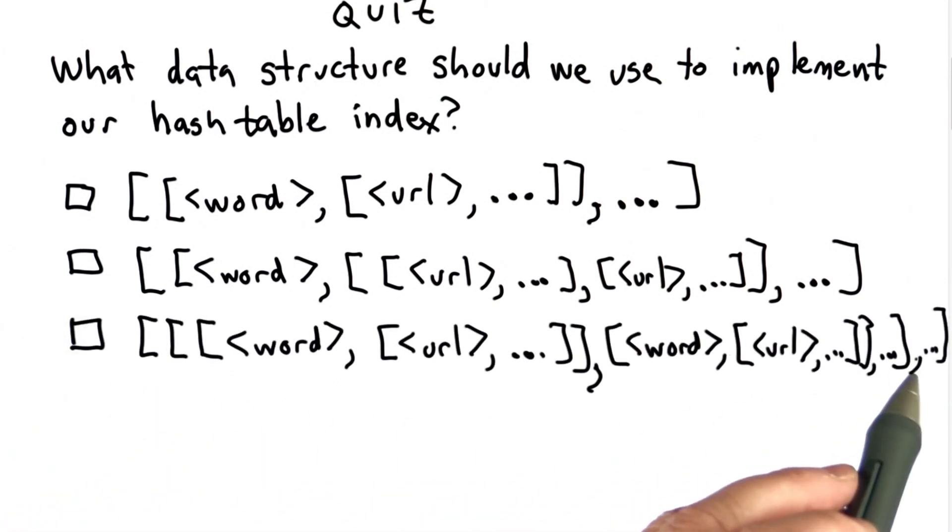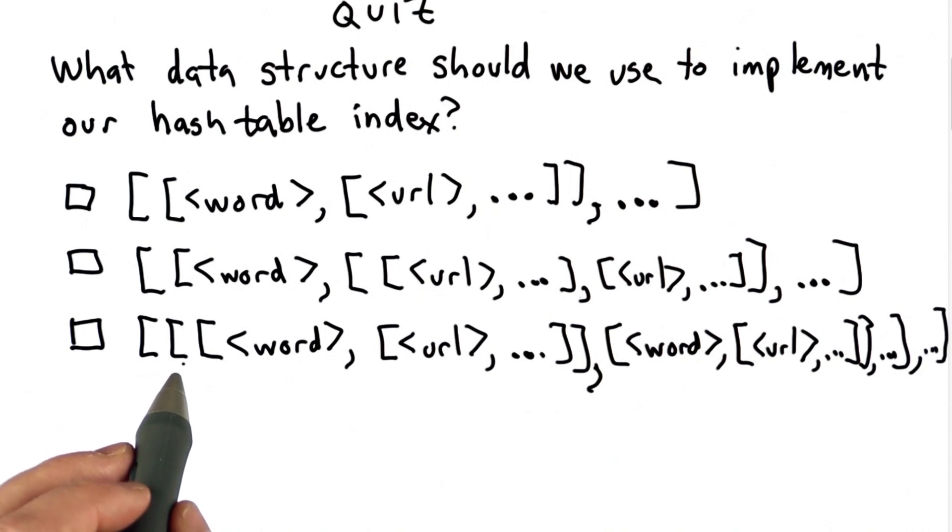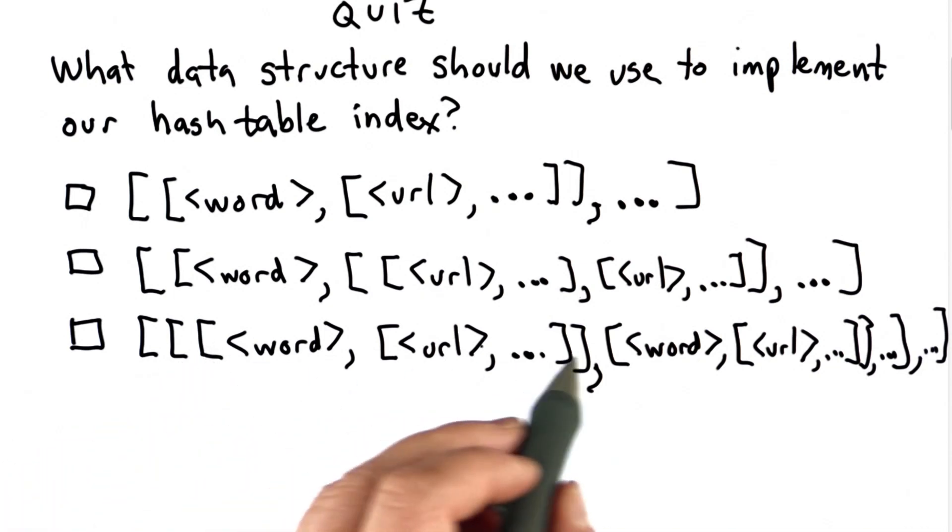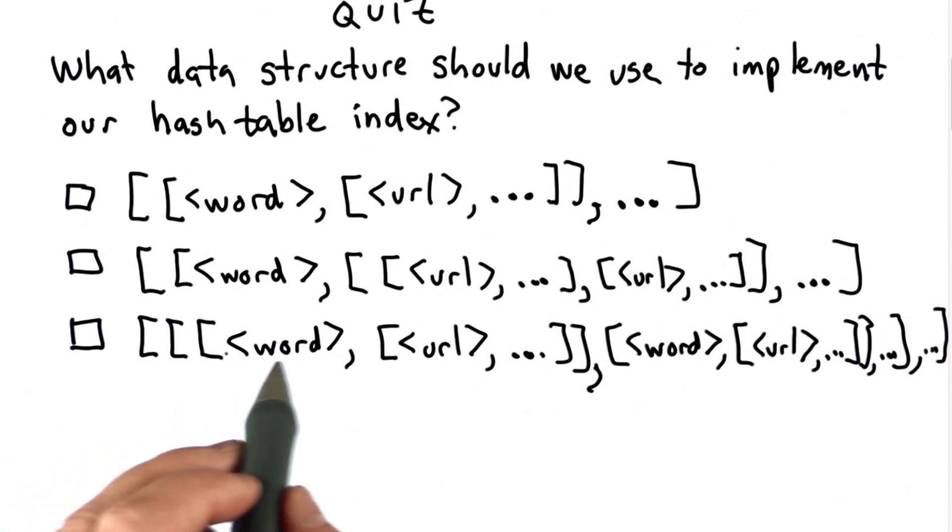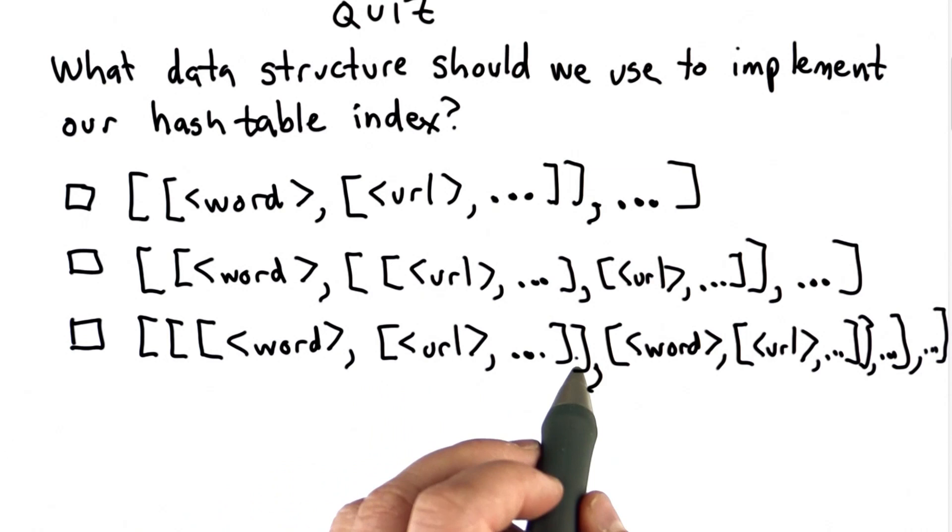The third choice is a list, where each element is a list, where the element lists themselves contain lists, where the element lists of the element lists are a list of a word followed by a list of all the URLs where that word appears. So we have three nested lists for choice 3.